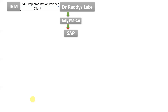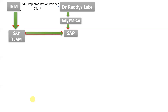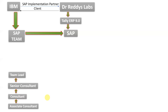From IBM's point of view, Dr. Redis is called the client. From Dr. Redis's point of view, IBM is the SAP implementation partner. Now from IBM — from the SAP implementation partner — one team comes into the picture. That team we call the SAP team. The SAP team will design the SAP application according to Dr. Redis's requirements. In the SAP team, the hierarchy starts from associate consultant, then consultant, senior consultant, and team lead.